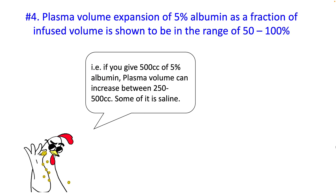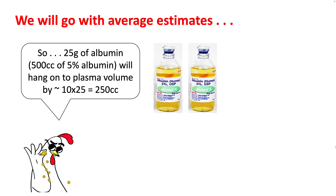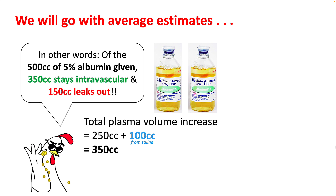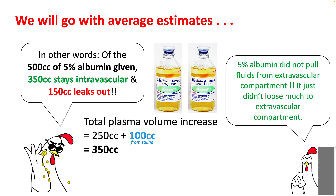If you look at 5% albumin alone, the plasma volume expansion is around 50 to 100%. That means if you give 500 cc of 5% albumin, your plasma volume will increase between 250 to 500 cc. Going with the average estimate, 25 grams of albumin will retain about 250 cc of plasma volume. So the total plasma volume increase will be 250 cc plus 100 cc from saline — approximately 350 cc. In other words, of the 500 cc of 5% albumin given, 350 cc stays intravascular and 150 cc leaks out. One way to put it is that 5% albumin didn't really pull fluid from the extravascular compartment — it just didn't lose much water to the extravascular compartment.